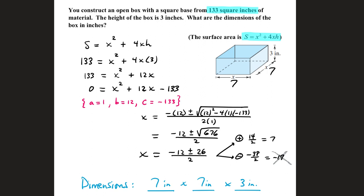You construct an open box with a square base from 133 square inches of material. The height of the box is 3 inches. What are the dimensions of the box in inches?